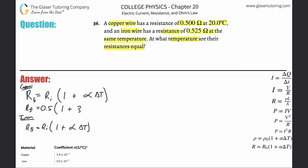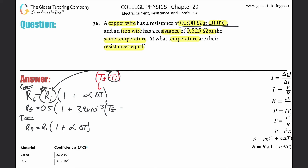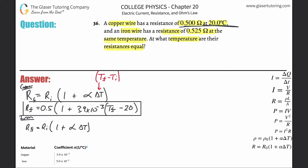which is 3.9 × 10⁻³), then multiplied by the change in temperature. The change in temperature is always final minus initial. We don't know the final temperature, but they told us the initial temperature is 20°C. So the change in temperature is (T_final − 20). This becomes the equation for copper, which I'll label R_f_Cu.